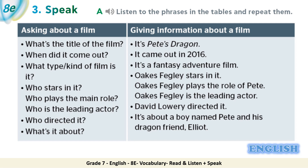'What's it about?' Giving information about a film: 'It's Pete's Dragon.' 'It came out in 2016.' 'It's a fantasy adventure film.' 'Oaks Fegley stars in it.' 'Oaks Fegley plays the role of Pete.' 'Oaks Fegley is the leading actor.' 'David Lowery directed it.' 'It's about a boy named Pete and his dragon friend Elliot.'